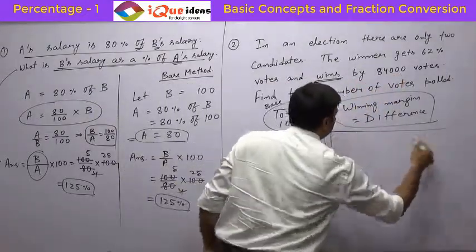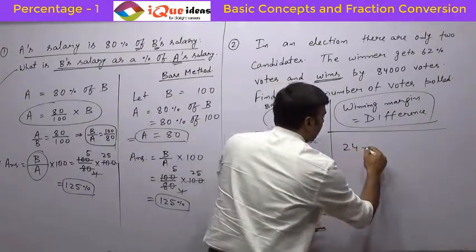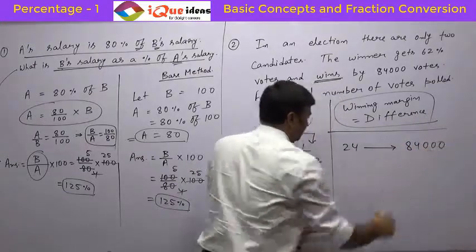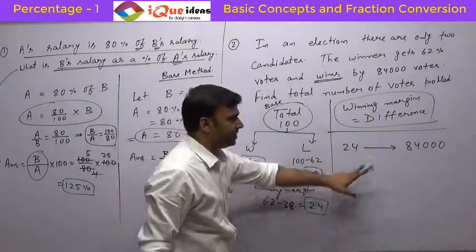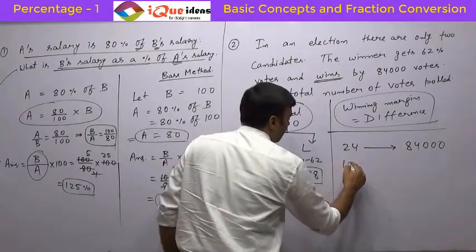So I think now we can do the simple unitary method calculation. That if this 24 is equivalent to 84,000, if this 24 is the winning margin which is actually 84,000, then how much will the total votes, that is 100 be?